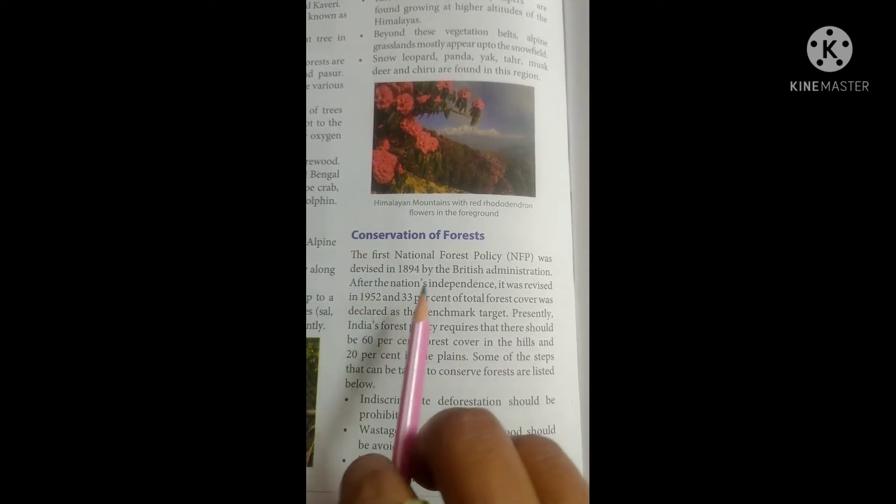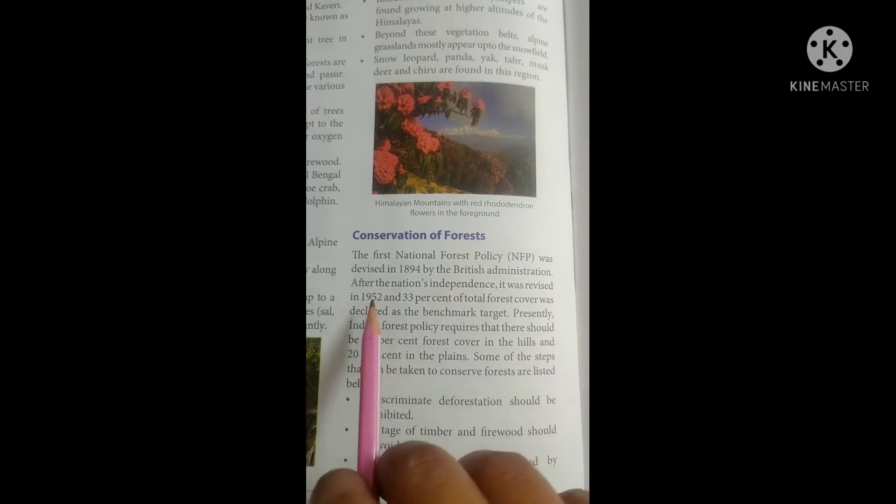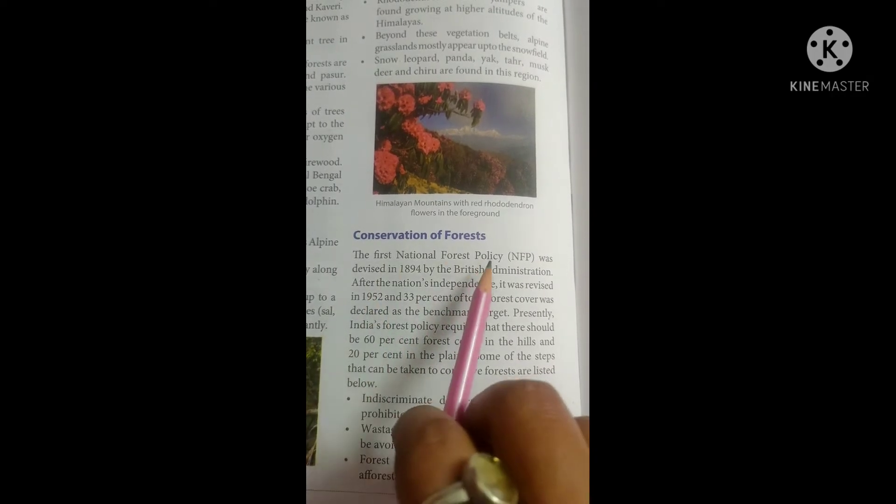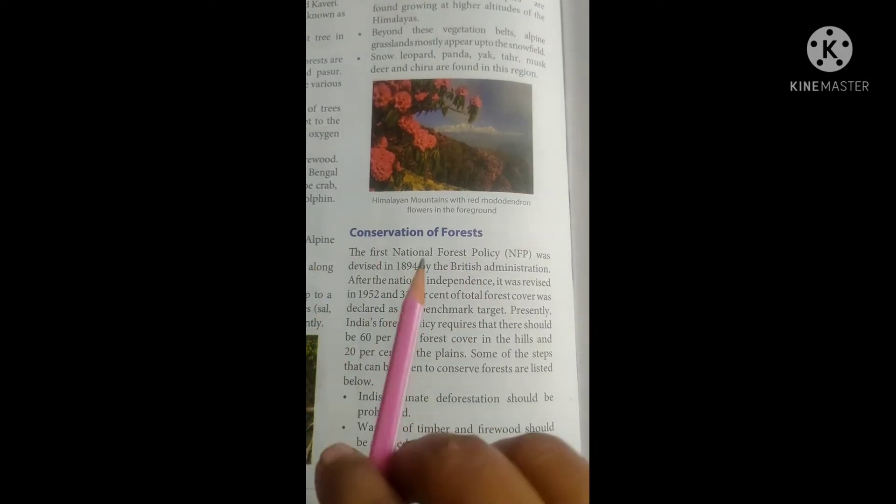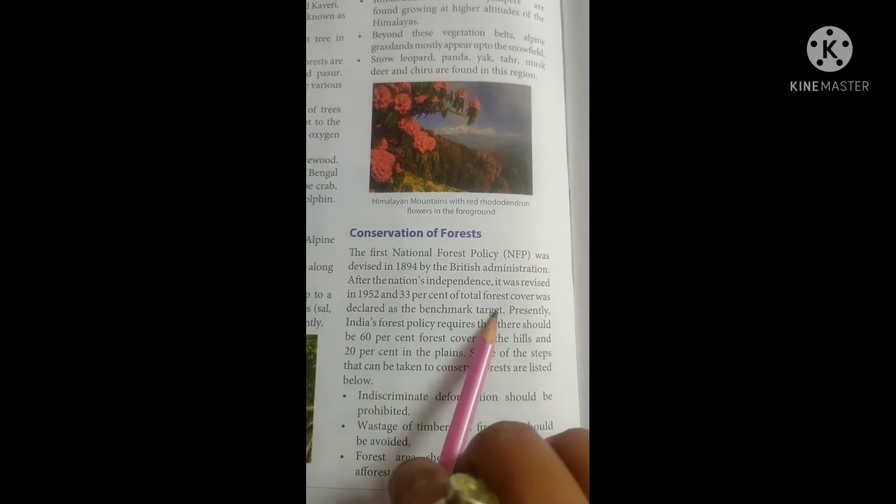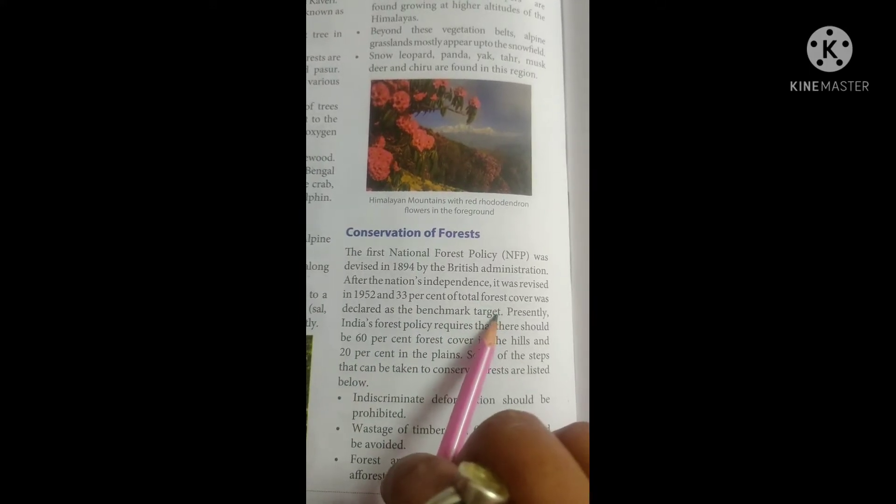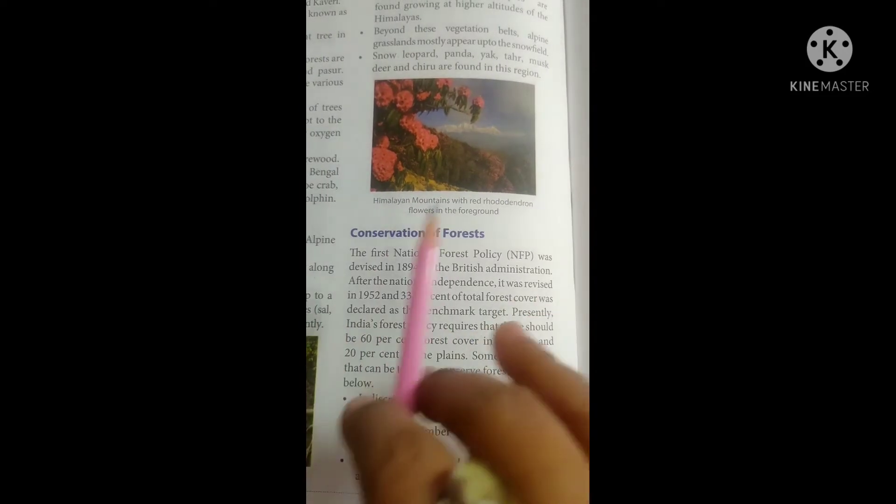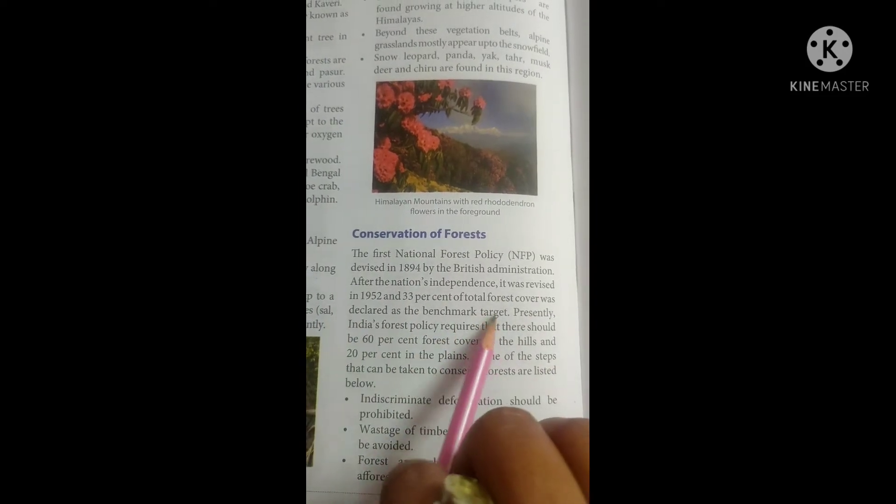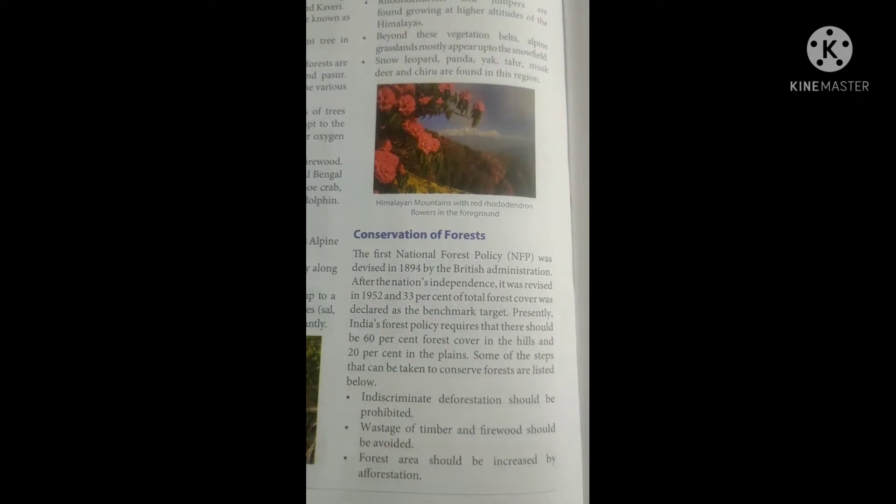When we got independence, it was revised in 1952. And 33% of the forest was declared as a benchmark target. It means that a lot of attention was kept to it. It was targeted in the same way.